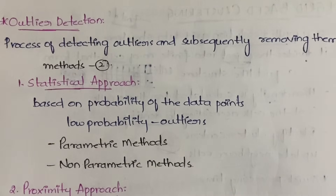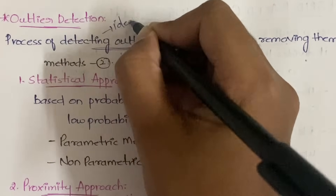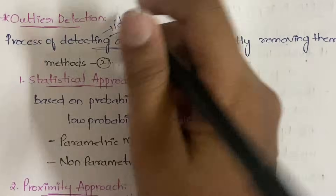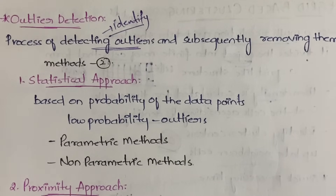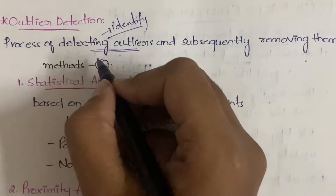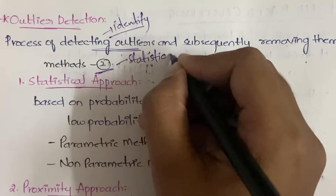Outlier detection is the process of detecting outliers — that is, you will be identifying the outliers. You identify the outliers and subsequently you will be removing them as well. So outlier detection does not only mean identification of the outliers; you will be even removing them.